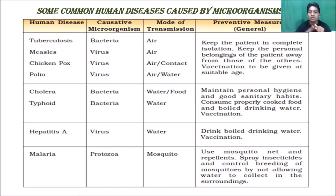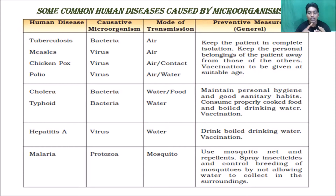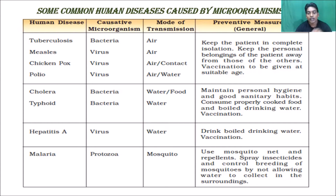To prevent cholera and typhoid, we must maintain personal hygiene and good sanitation habits, eat properly cooked food, boil drinking water, and take vaccination. Hepatitis A is caused by a virus and is also transmitted through water. Preventive measures for hepatitis A include drinking boiled water and taking proper vaccination.